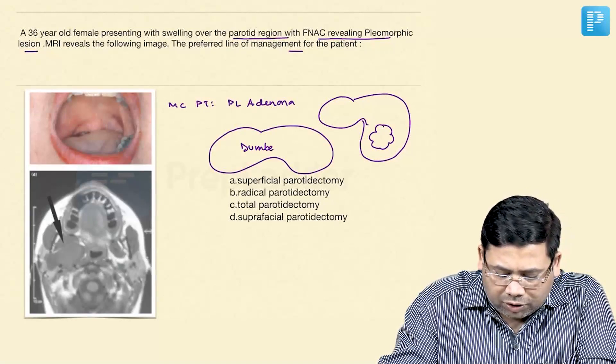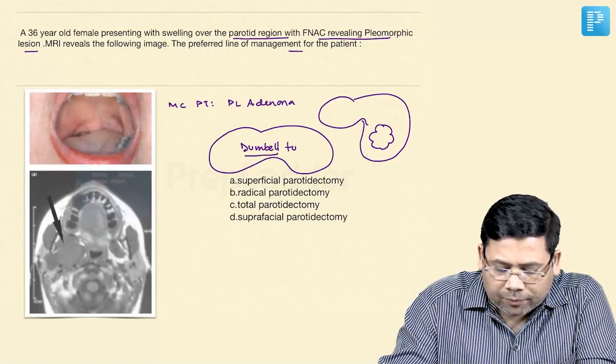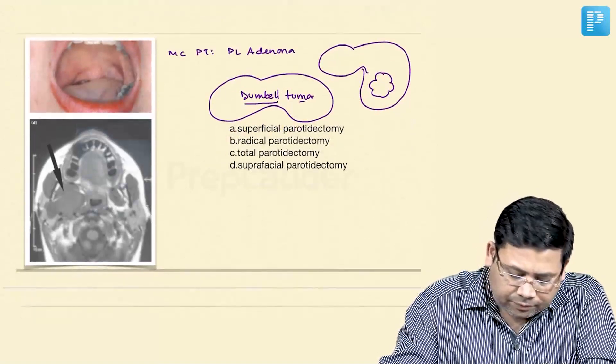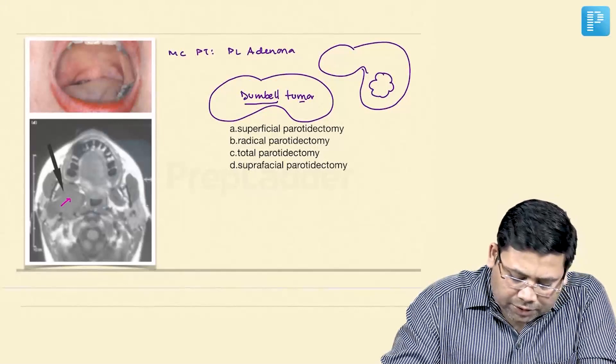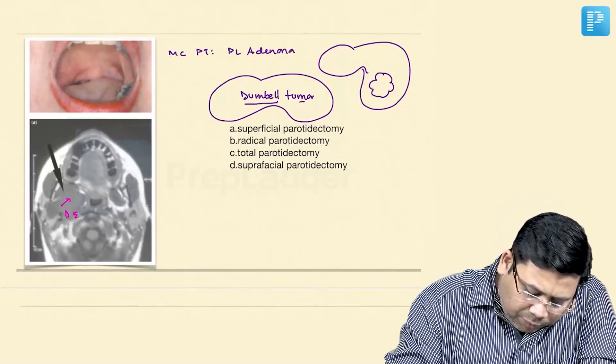If it involves both lobes it is known as a dumbbell tumor, but here something is different. If you see this, this is the place where the tumor is. So this is a deep lobe tumor.